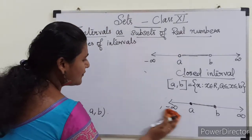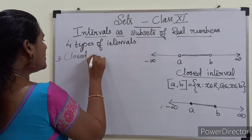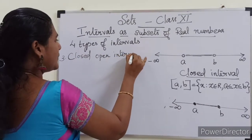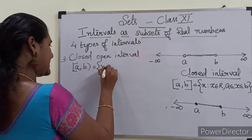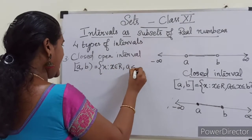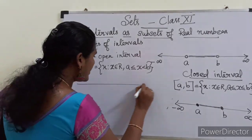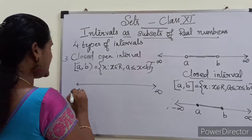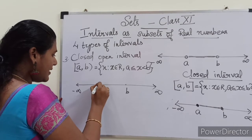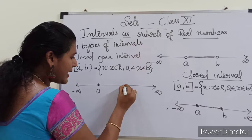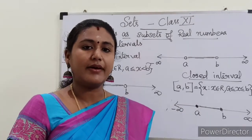For the closed-open interval [a, b), the set builder form is the set of all x such that x belongs to R and a ≤ x < b. On the number line, endpoint a is included so we darken that point, and b is not included so we place a hollow circle there, then darken the in-between region.